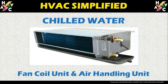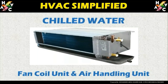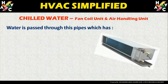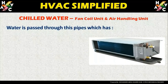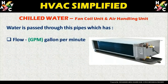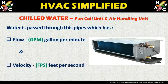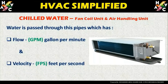For chilled water fan coil units and air handling units, to calculate the GPM for any particular unit there are different parameters required in an HVAC system. We need to understand the supply and return side of the chilled water pipe. Water is passed through these pipes, and flow is measured in GPM — gallons per minute — and velocity in FPM, which is feet per minute.